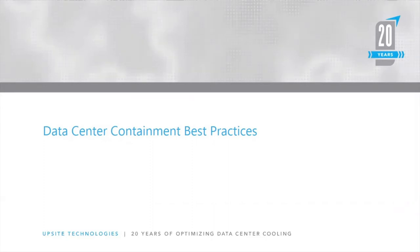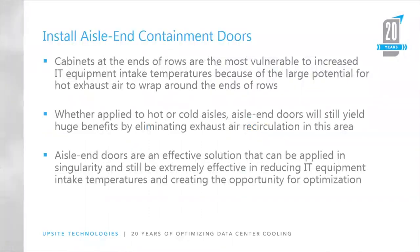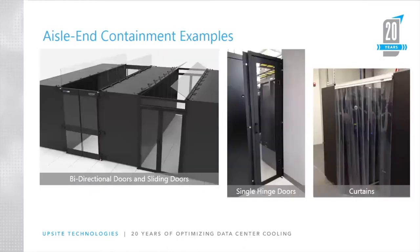Let's look at some of the commonly known best practices when it comes to airflow management at the row level and data center containment. Primarily, the first step is always to install doors at the ends of the aisle and contain either the hot or the cold aisle. This can reap significant benefits even if that's all you do — if you have a limited budget, just putting doors on the cabinets can block exhaust air recirculation around the ends of the row and significantly improve conditions.